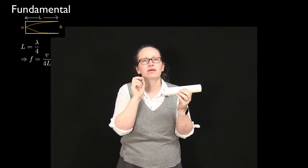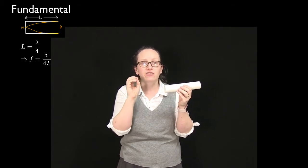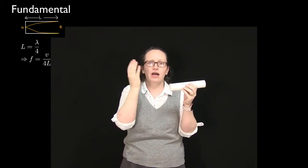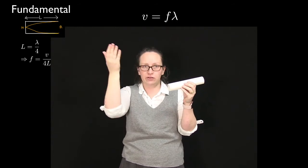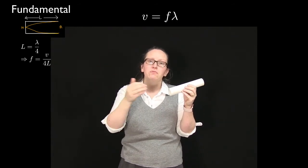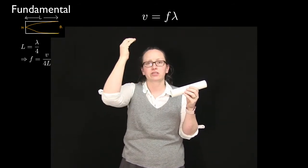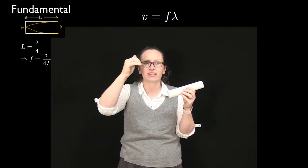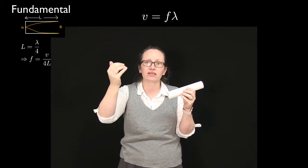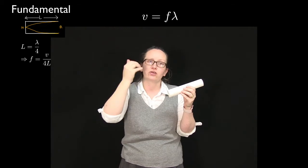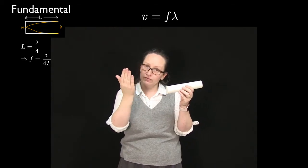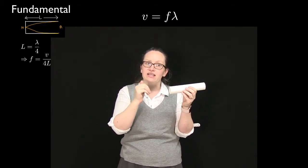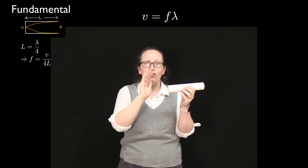And so we can work out the fundamental frequency of this pipe. If we use our equation for a wave, v equals f lambda, that comes up a lot, we can write that the frequency is equal to the velocity over the wavelength, and in this case the wavelength is equal to 4L. So the frequency, which is the fundamental frequency in this case, is equal to v over 4L.